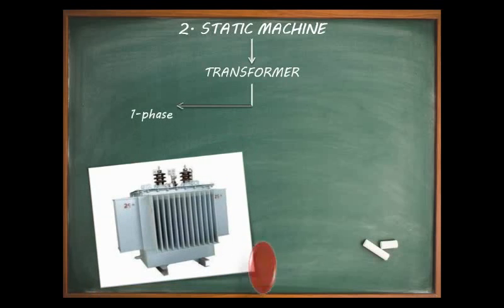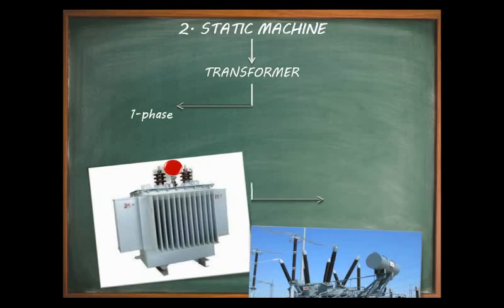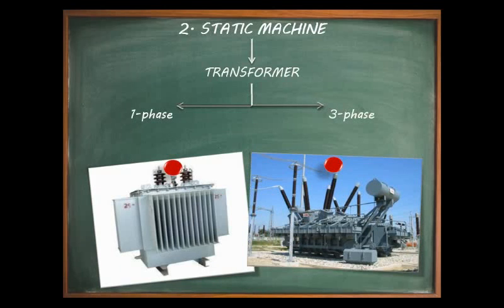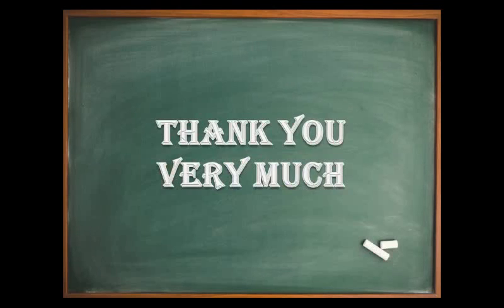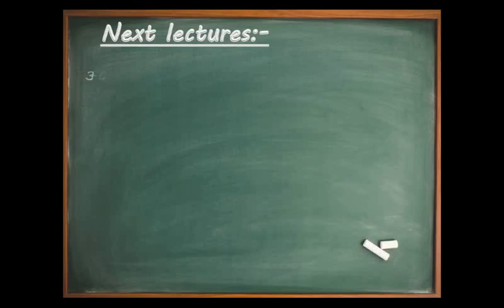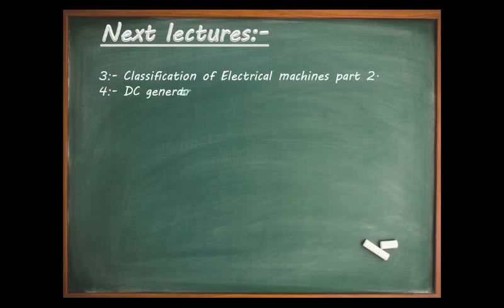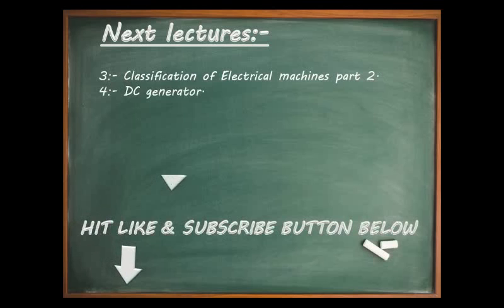Transformers are divided into single-phase transformers and three-phase transformers. This is just the first part of the classification of electrical machines. DC motors, DC generators, transformers, induction machines, and synchronous machines will be further divided into key parts in the next part — classification of electrical machines, part 2. Please hit the like and subscribe button and support us. Thank you very much.